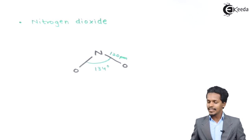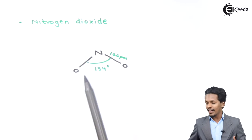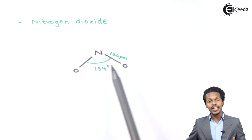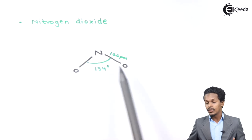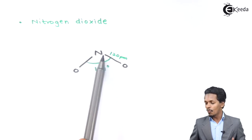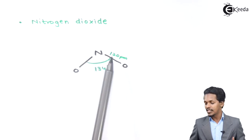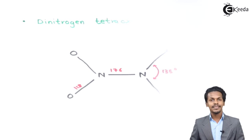The next is Nitrogen Dioxide. This structure makes a bond angle of 134 degrees, where Nitrogen is attached to both Oxygen atoms. The bond length between Nitrogen and Oxygen is found to be 120 picometers.